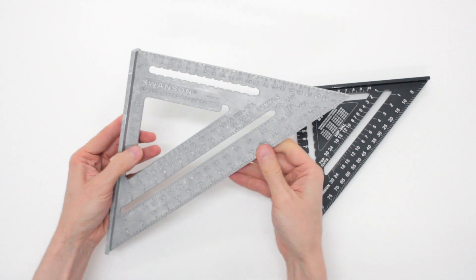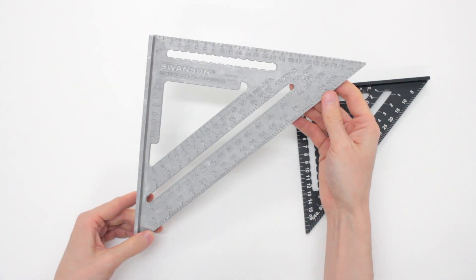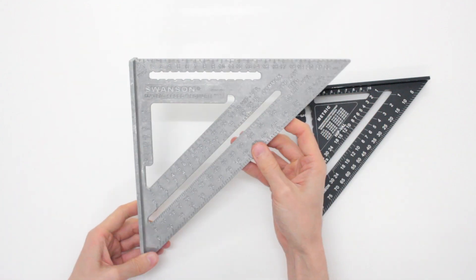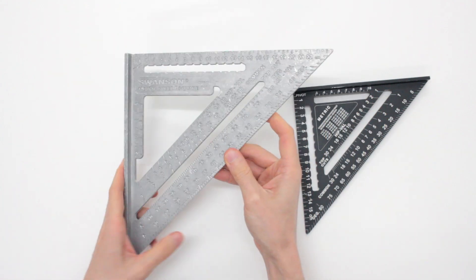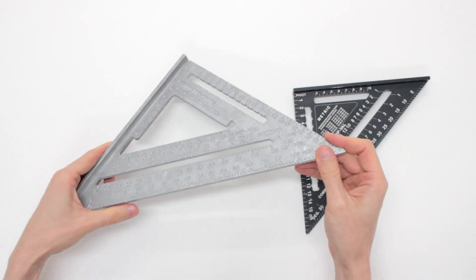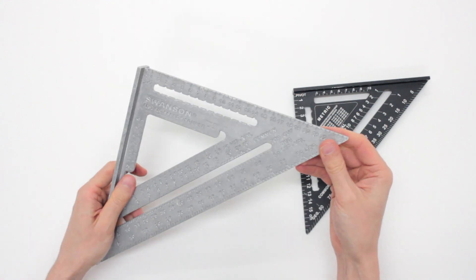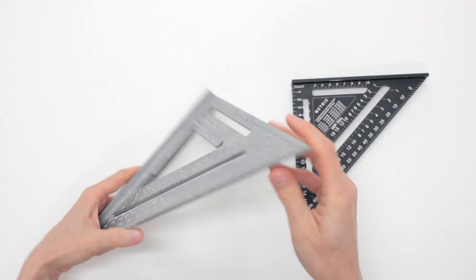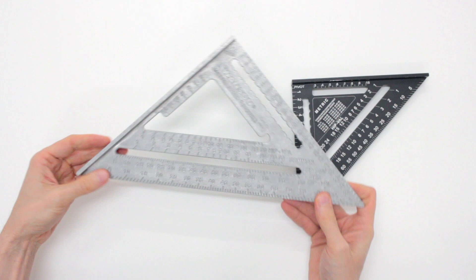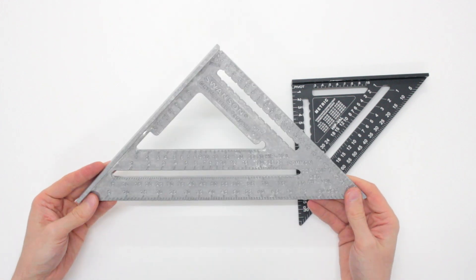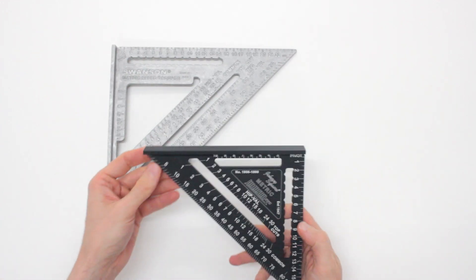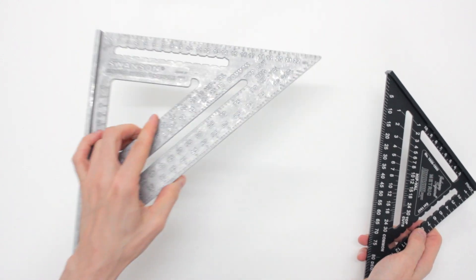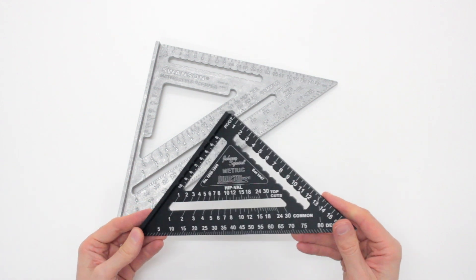Unlike the classical Swanson speed square, the metric one is huge. It is 10 inches on the side, unlike the 7 inches of the original one, which is weird and, in my opinion, too big to carry around in your tool pouch. It won't fit in a tool holster made for the classical 7-inch speed square.